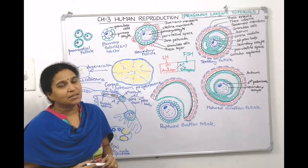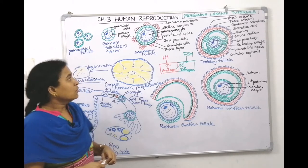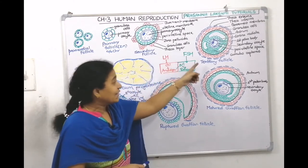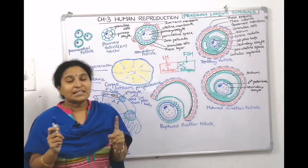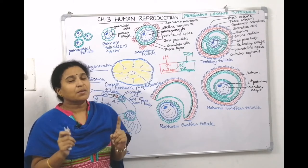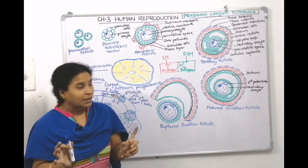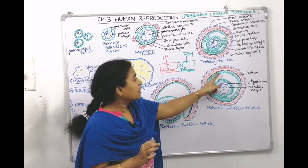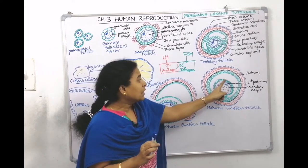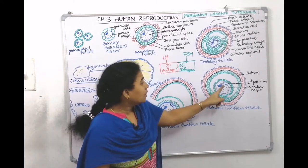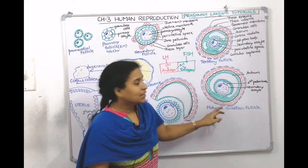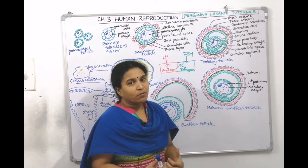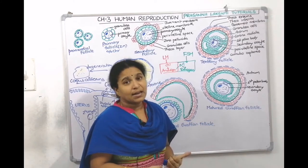The process of oogenesis is more complex than spermatogenesis. The stages are: primordial follicle, primary follicle, secondary follicle, tertiary follicle, and matured Graafian follicle. In NCERT exercises, there is a question asking for a diagrammatic representation of a matured Graafian follicle. Its layers include: teca externa, teca interna, basement membrane, granulosa cells, fluid-filled antrum, corona radiata, zona pellucida, first polar body, vitelline membrane, secondary oocyte, and cumulus oophorus.